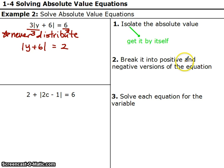Step number two. Break it into positive and negative versions of the equation. So, this is the different part from just a regular linear equation. We're going to split this up into two separate equations. On one side, it's going to be y plus 6 equals 2. That's the positive version. On the other side, it's going to be y plus 6 equals negative 2. That's the negative version. Notice the plus 6 did not change signs. It's plus 6 on both problems. The only thing that changes signs is what it's equal to, positive 2 and negative 2. So step three, solve for the variable.